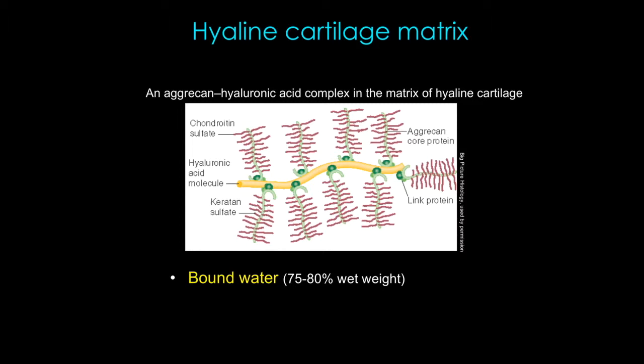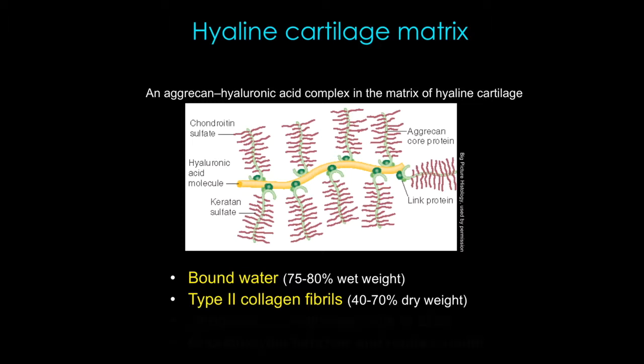The extracellular matrix of hyaline cartilage contains proteoglycans and collagen, mostly proteoglycans. The main proteoglycan is aggrecan, which forms large aggregates with hyaluronic acid molecules. Since these are all negatively charged, they hold a large amount of water in the tissue, giving hyaline cartilage its high tensile strength, cushioning, and lubricant properties. The main collagen in hyaline cartilage is type 2, which unlike type 1 — which forms large fibers in dense connective tissue — forms fibrils. So there's not a lot of texture in this cartilage, and that's why it looks almost transparent.